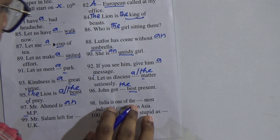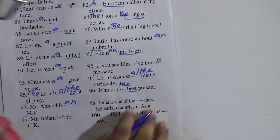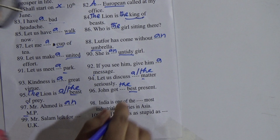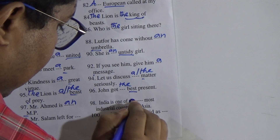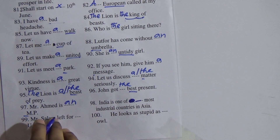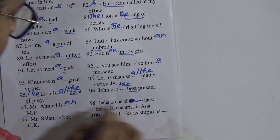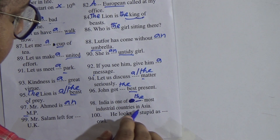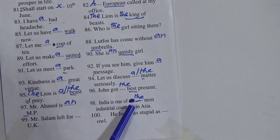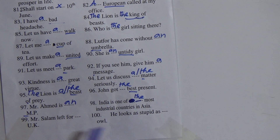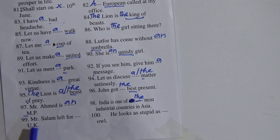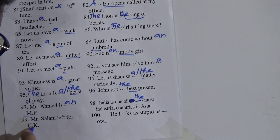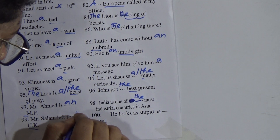98: 'India is one of ___ most industrial countries in Asia.' This is a superlative, so we put 'the': 'India is one of the most industrial countries in Asia.'